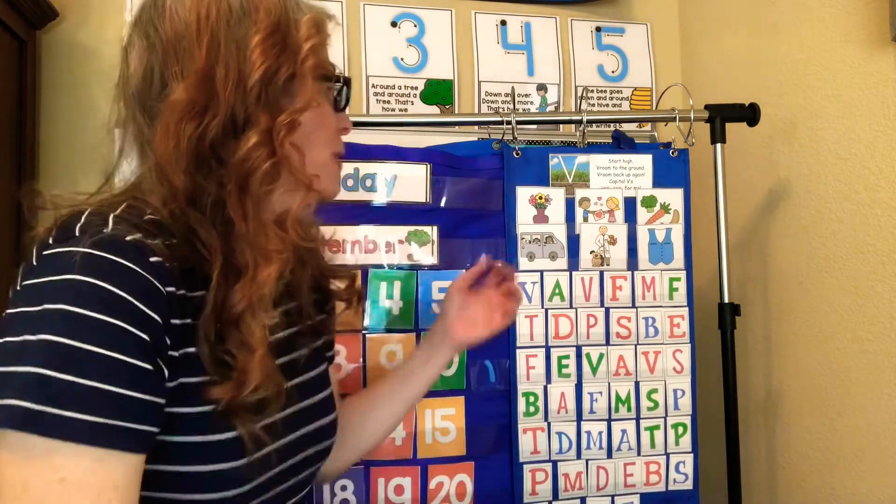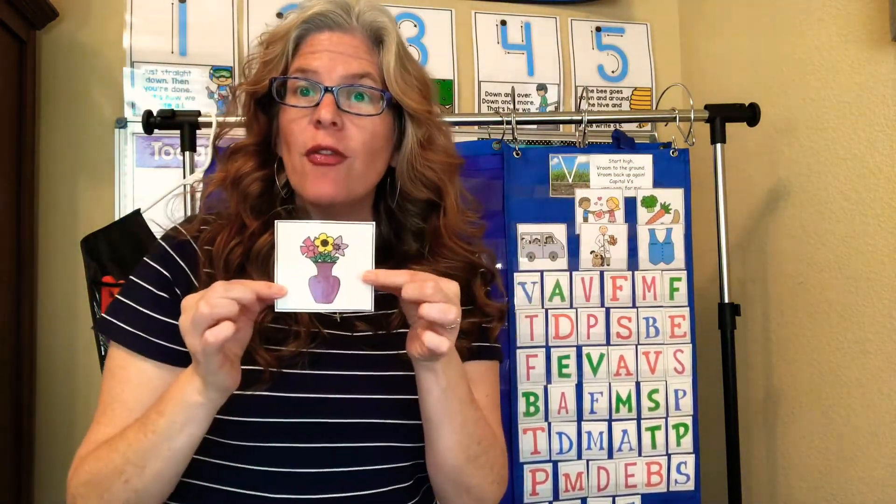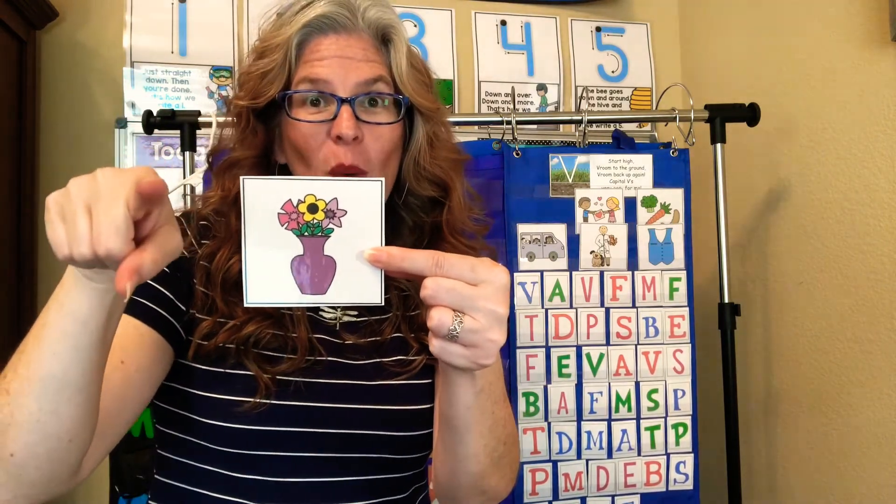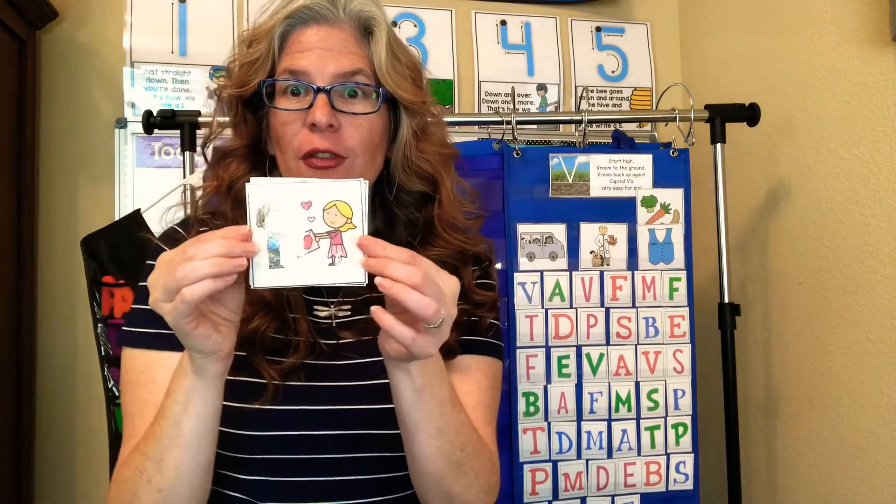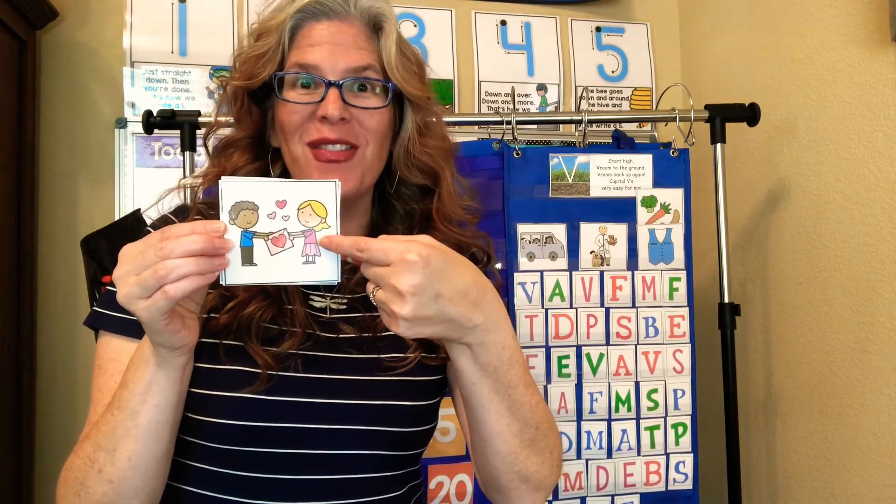Here, I'll put them closer to the camera so you can see. I'll go first. V for vase. Your turn. V for vase. Excellent. My turn. V for valentine. Your turn. V for valentine. Good.